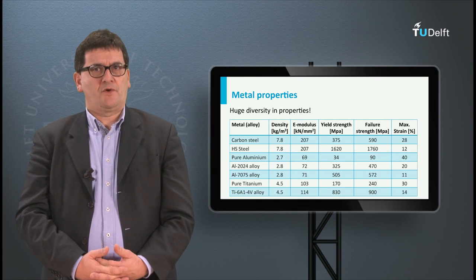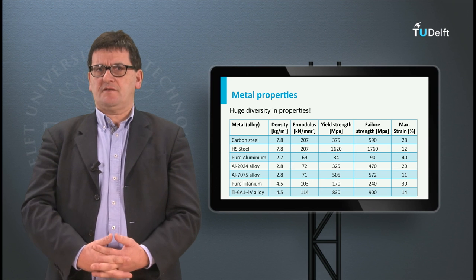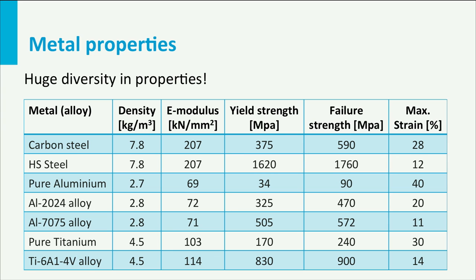A typical example of the use of mechanical properties like stress and strain can be seen in this table, which gives tensile test data for different metal alloys. In the first column you see a number of different metal alloys. The second column gives density. Next to that is the elastic or Young's modulus, representing the material's resistance to deformation. Column 4 shows the yield stress — the stress when plastic deformation starts. Column 5 gives the failure strength, and the last column shows the failure strain — the maximum strain at which the metal alloy breaks.